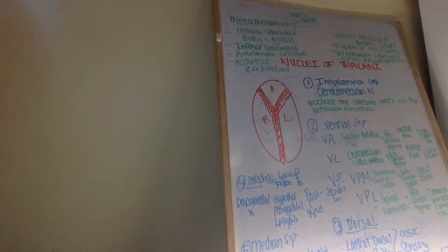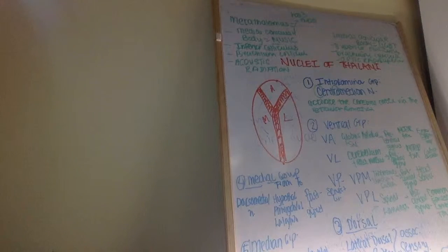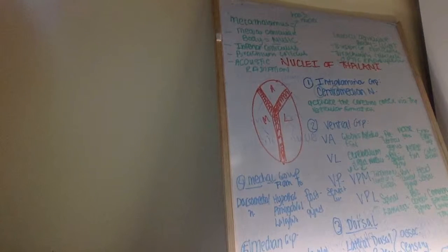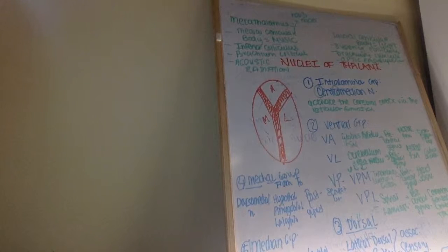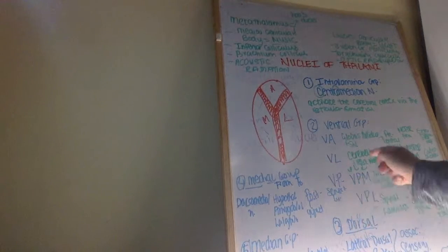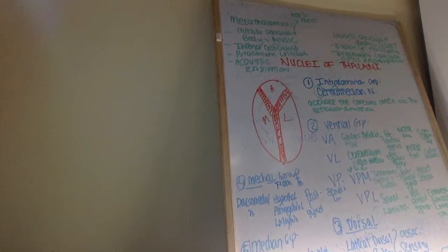Now for VPM and VPL — these are sensory nuclei. For VPM: the trigeminal lemniscus always ends in VPM, and trigeminal has an M, as does VPM. Another way to remember is 'putting makeup on your face' — we get general sensation from the head via the trigeminal lemniscus and taste sensation via the gustatory lemniscus. VPM and VPL are both sensory, so they project to the postcentral gyrus — the somatosensory cortex.